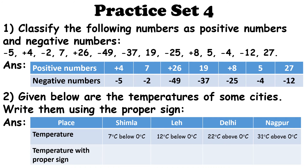We have to write the temperatures using the proper sign. The first city is Shimla — its temperature is 7 degrees Celsius below 0, so we write it as minus 7 degrees Celsius. The second city is Leh — its temperature is 12 degrees Celsius below 0, so we write it as minus 12 degrees Celsius.